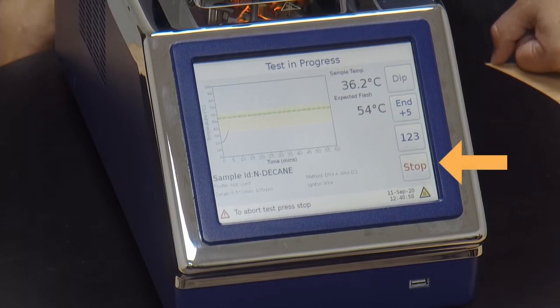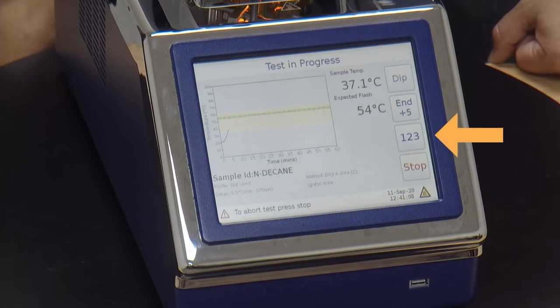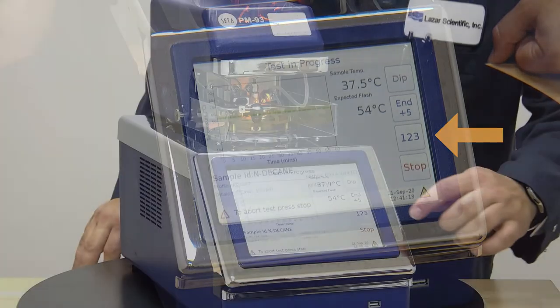The stop button will stop your test at any point. If you realize you've done something terribly wrong or mislabeled, you can stop the test. The button above it, the one two three button, takes you off the screen with the graph and small numbers and brings you to a screen with a large set of numbers.